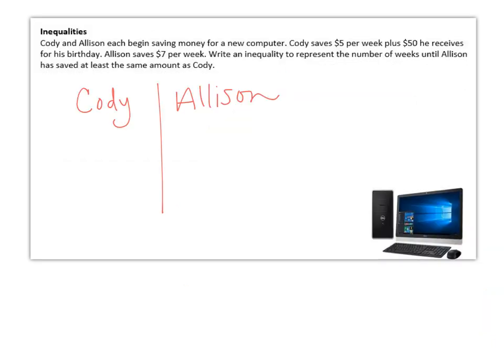Next one is an inequality question. You set it up just like an equation. So Cody saves $5 per week. So that's 5x. Plus he had $50 that he got for his birthday. And then Allison saves $7 per week. And it says write an inequality to represent the number of weeks until Allison has saved at least the same amount as Cody. So to save at least the same amount as Cody, she could have either less than or equal to him.